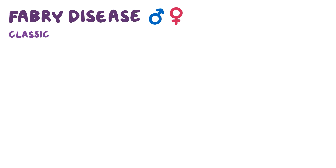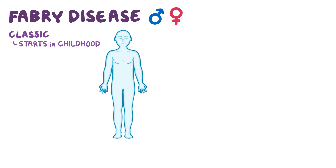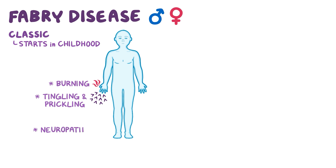In classic Fabry disease, symptoms start in childhood and include burning, tingling, prickling, and painful neuropathic pain in the hands and feet, frequently triggered by exercise, fatigue, stress, or illness. There may also be a gradual decrease in sweating in childhood, until many teens and adults stop sweating entirely.